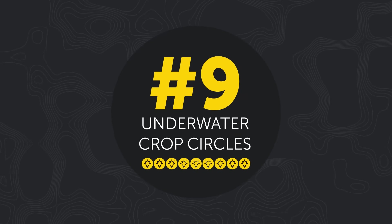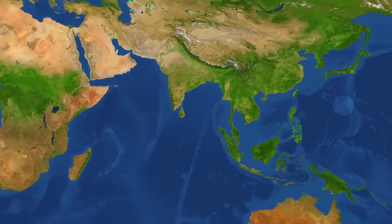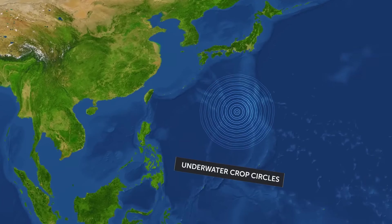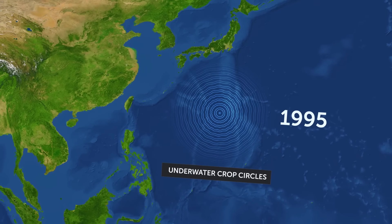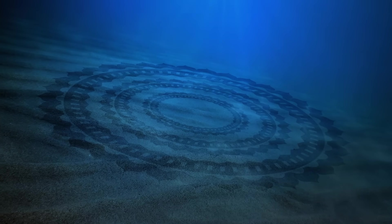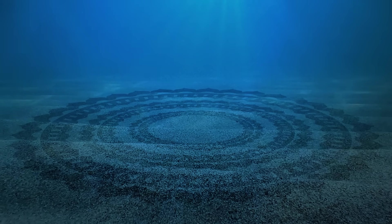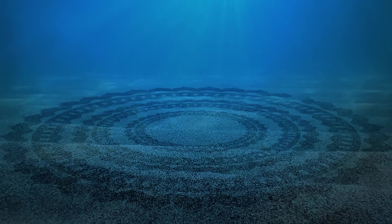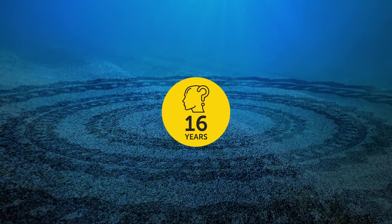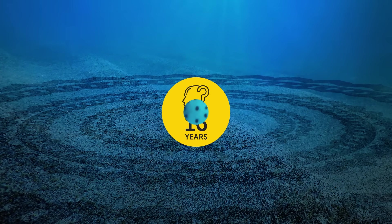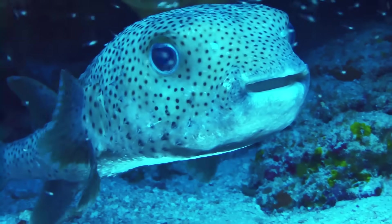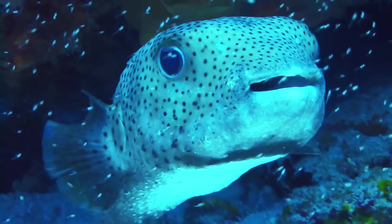Underwater Crop Circles. For the first time, underwater crop circles were spotted in 1995 close to Japan's southern coast. Local divers called these 7-foot-wide, artfully-patterned structures mystery circles. The enigma had been plaguing many minds for almost 16 years until the culprit was finally caught. Imagine the researchers' surprise when it turned out to be a male pufferfish.